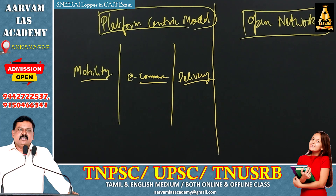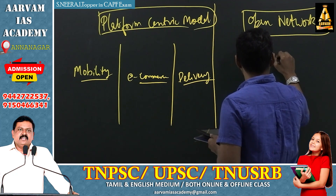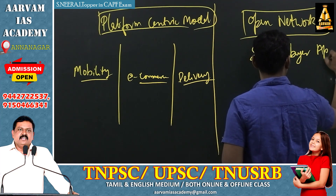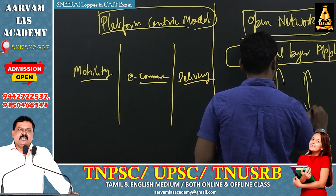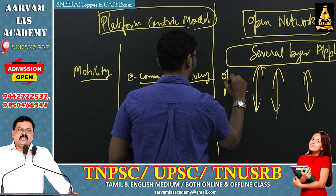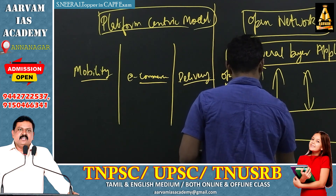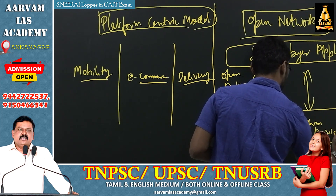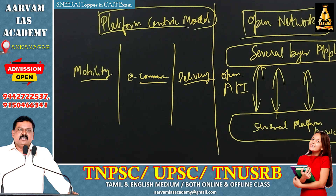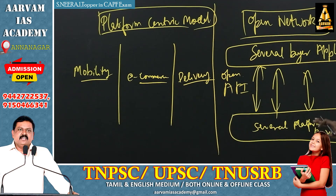There are several buyer applications already available. This advantage is not easy to access for small traders under traditional platforms. With ONDC, traders can reach consumers directly through mobility apps, delivery apps — for example, Ola, Uber — everything integrated on the same interface. That is the core idea of ONDC.